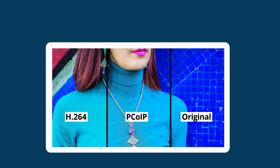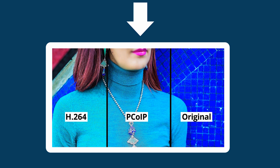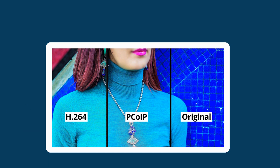Here we can see an example of an original image on the far right, and how PCoIP is able to ensure color accuracy when compressing, encrypting, and transferring images, whereas lossy single-codec alternatives like H.264 cannot preserve color accuracy.